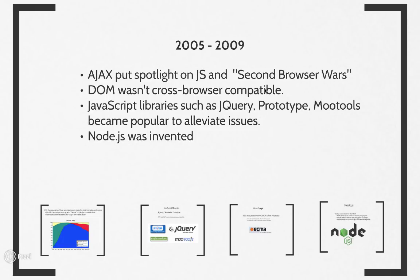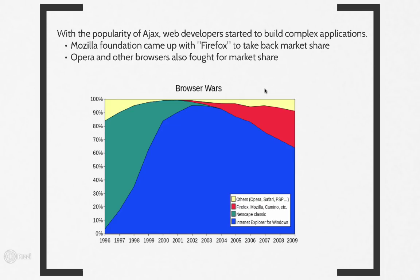That brings us to the 2005 to 2009 time frame. During this time, everyone wanted to build complex, desktop-like applications in the browser. Firefox had great developer tools, so a lot of people started building for Internet Explorer — which had a huge market share — and for Firefox. Browsers like Firefox, Safari, Opera, and others started to make a dent in IE's dominance. But that led to another problem: it was really hard to build complex applications that were also cross-browser.